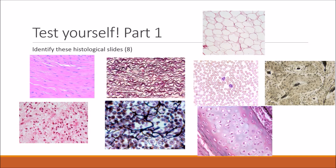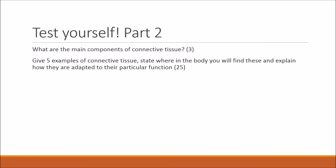We've now come to the last part of the presentation. In this test section, try to get as many points as you can. Looking at all the images, are you able to identify these histological slides? Try to get all eight correct. For the written questions, I won't give you the mark scheme — try to answer the question and create your own. For three marks: what are the main components of connective tissue? For the essay question: give five examples of connective tissue, state where in the body you will find them, and explain how they are adapted to their particular function. This may require some extra reading, but it will help in exams. Thank you for watching, good luck revising, and peace out.